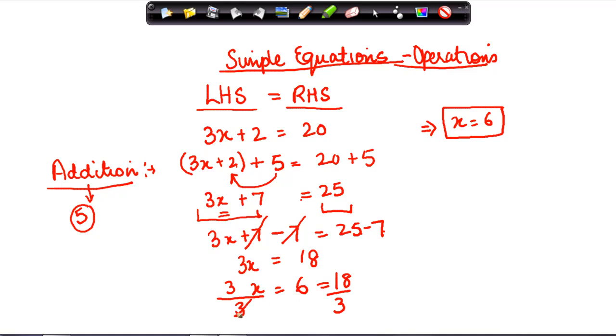So 3 gets cancelled with 3, and then 18 divided by 3 can also be written as 6. So the value of the number remains at 6.